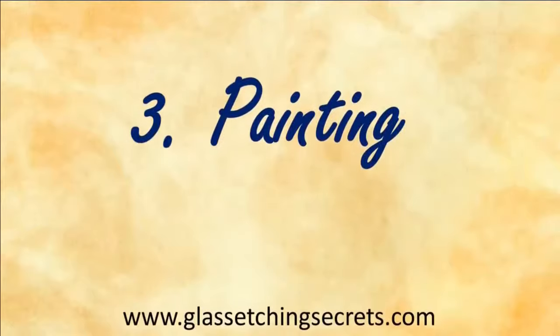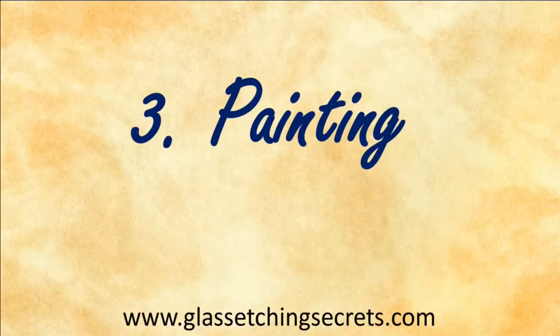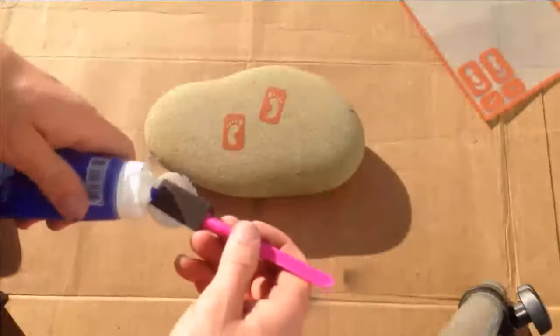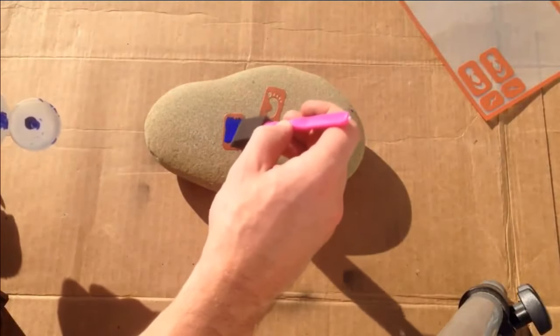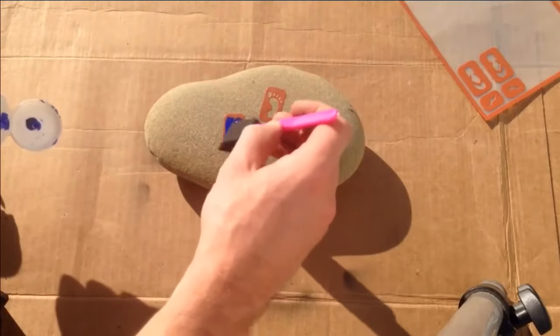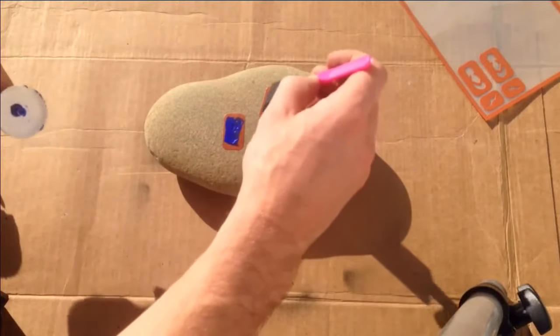In this third example, I'm going to use these stencils with paint. As you can see, I just took a foam brush and acrylic paint and applied them to the stencil. Make sure there's a nice smooth coat.